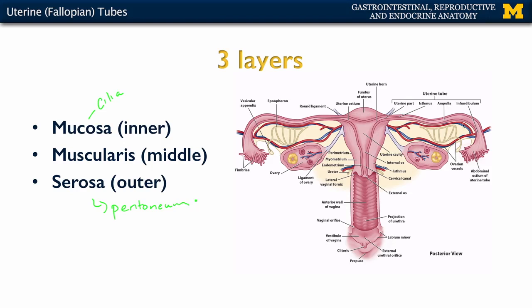To summarize: the oocyte moves from the ovary into the peritoneal cavity, through the uterine tube, and into the uterine cavity. Depending on whether it has been fertilized or not, that will change what happens within the uterus quite dramatically. Let's continue our discussion with the structures and function of the uterus.